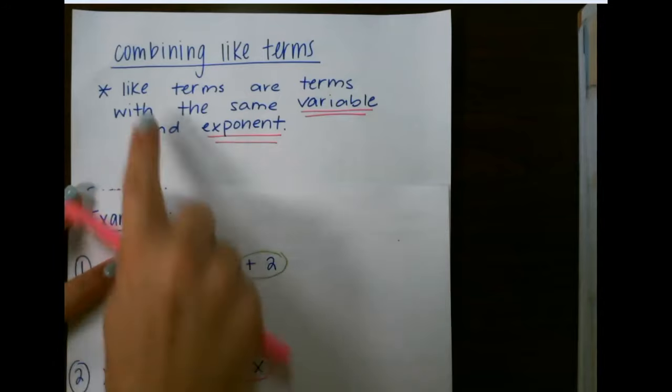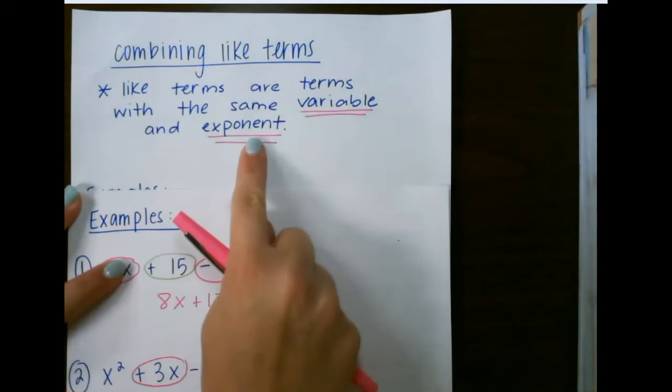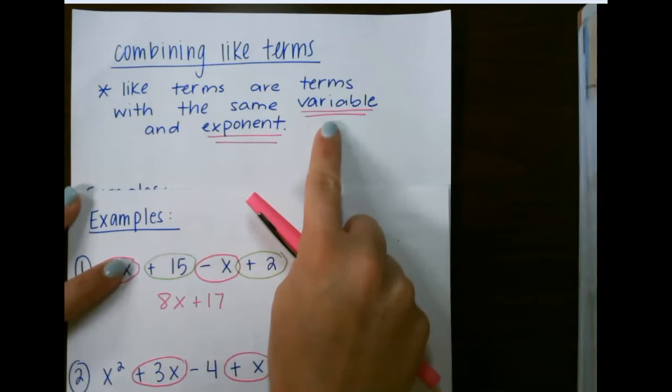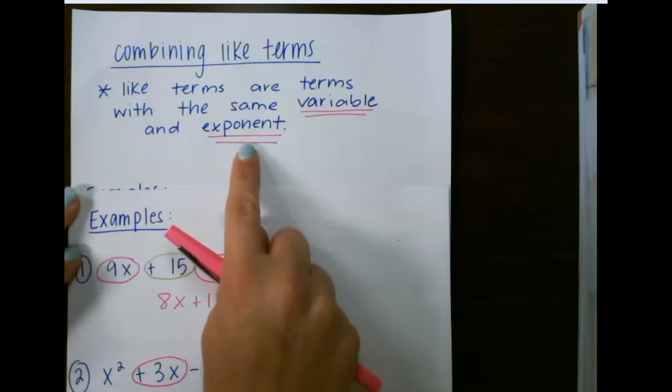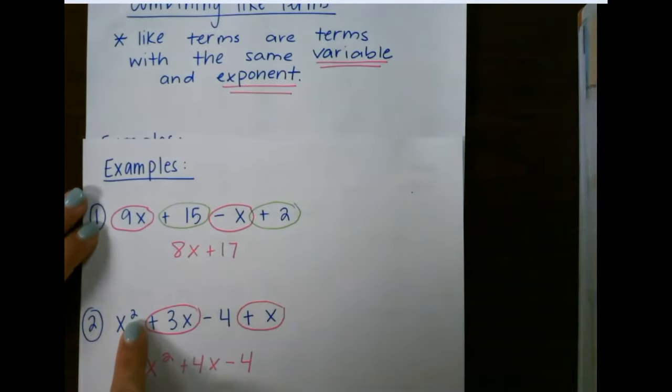It's important to remember that like terms are terms with the same variable and exponent. Make sure you pay attention to the variable, which is the letter, and the exponent, which is the small number above it, like seen here.